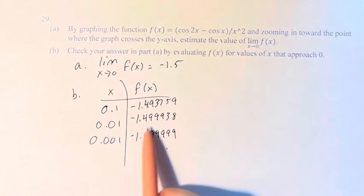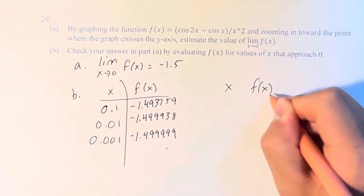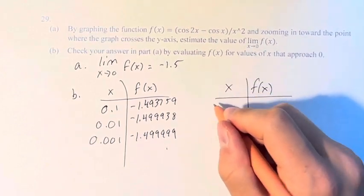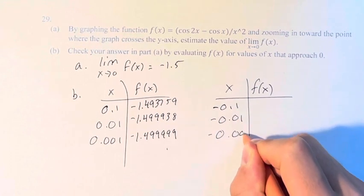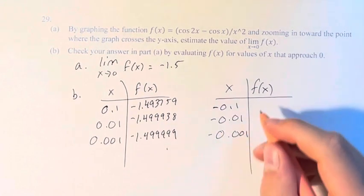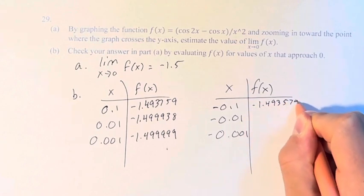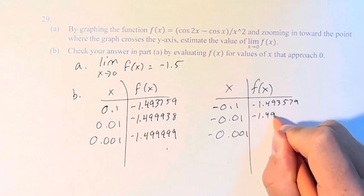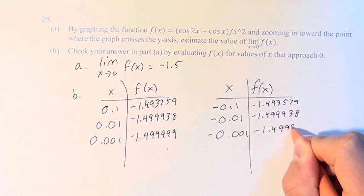But we have to check the other side with negative 0.1, negative 0.01, and negative 0.001. And these values are negative 1.493579, negative 1.4999938, and negative 1.499999.